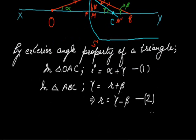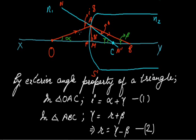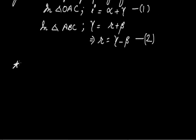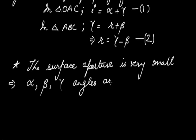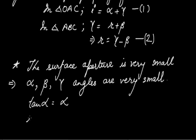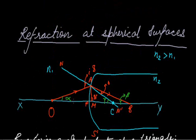In this mathematical process we take an assumption: the refracting surface has a very small aperture. This implies that all angles — alpha, beta, and gamma — are very small angles. Because of this small angle assumption, tan(alpha) ≈ alpha, tan(beta) ≈ beta, and tan(gamma) ≈ gamma.